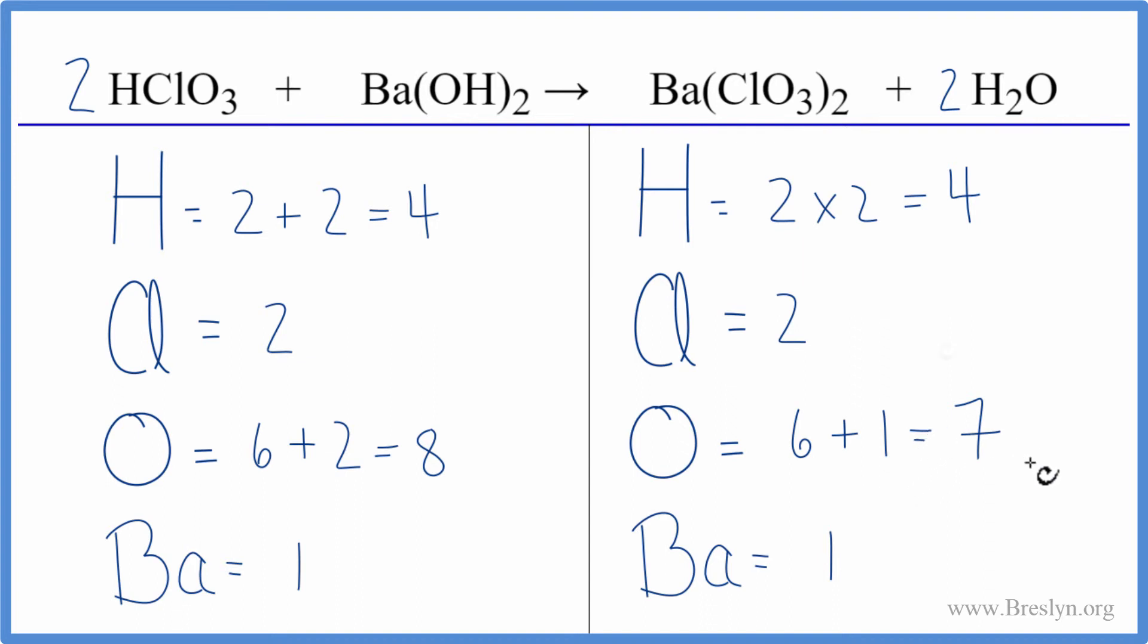Let's update the oxygens. We had two times the three, so we had six, plus we had one times the two. And that gives us eight. And that balances this equation.